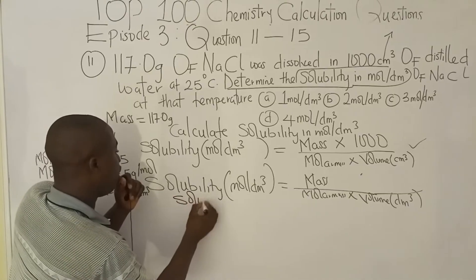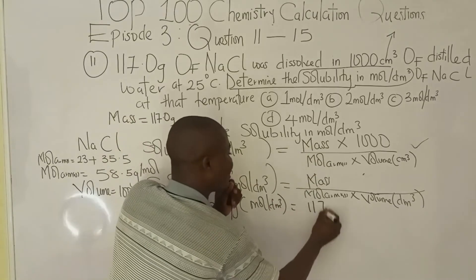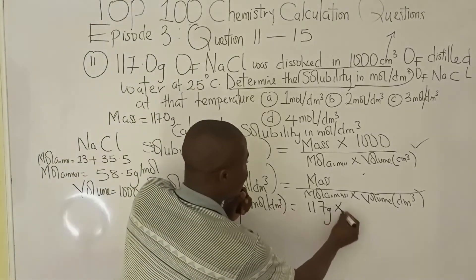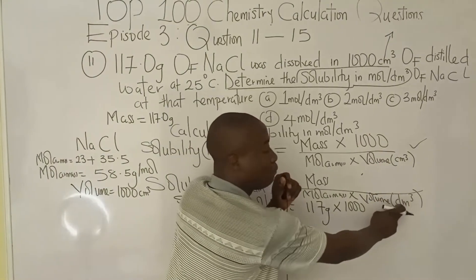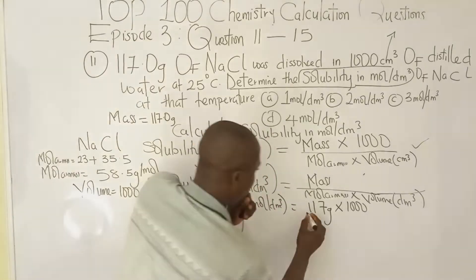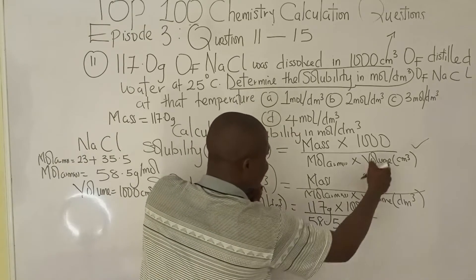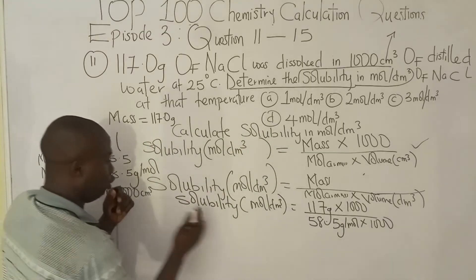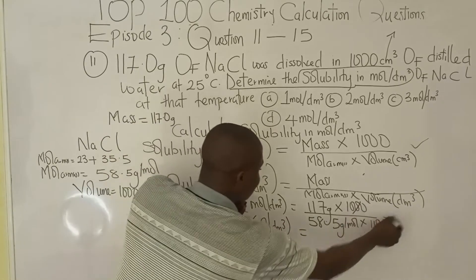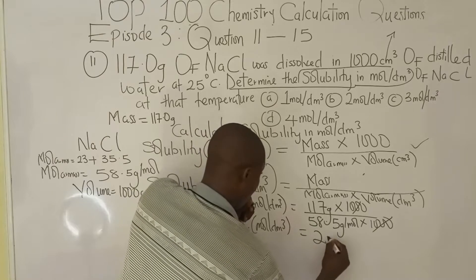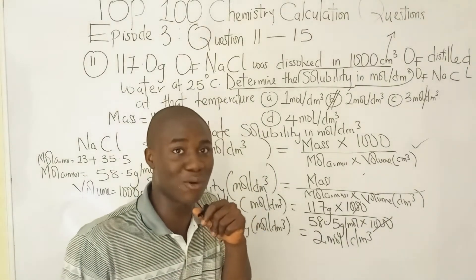Now let's solve for the solubility in moles per dm³. Mass is 117 grams, times 1000 added to the formula because volume is in cm³, over molar mass of 58.5 grams per mole, times volume of 1000. The 1000s cancel, giving us 117 divided by 58.5, which equals 2 moles per dm³. The answer is option B.